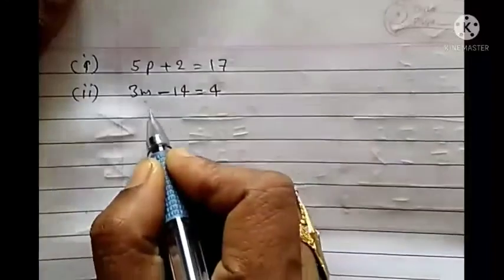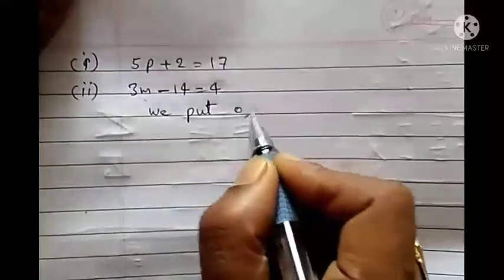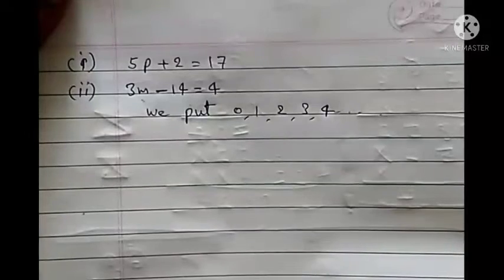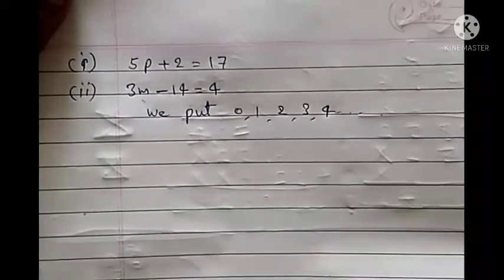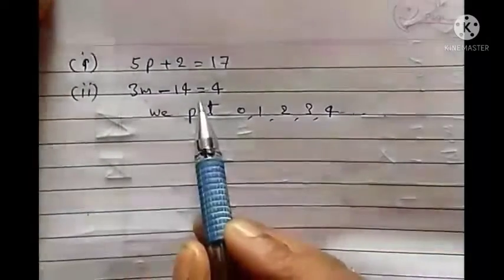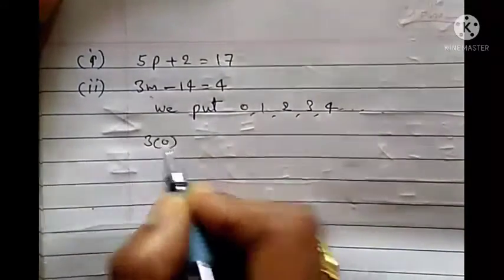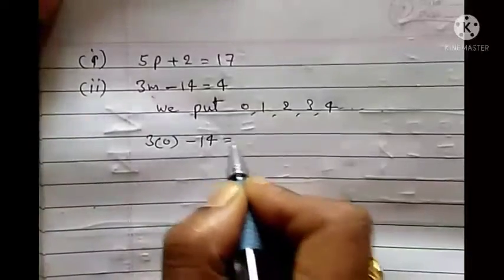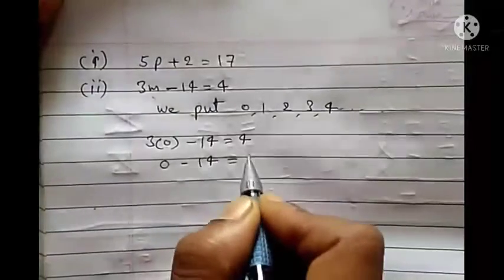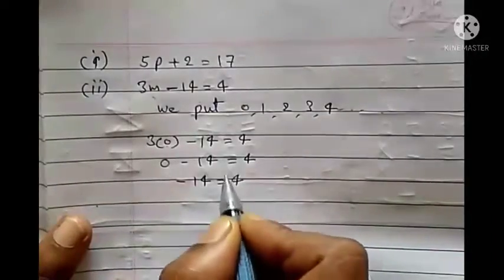Now let's start. We put 0, 1, 2, 3, 4 etc. and keep substituting until both sides are equal. The right-hand side is 4. When we put m equals to 0: 3 times 0 minus 14 gives minus 14, which is not equal to 4.